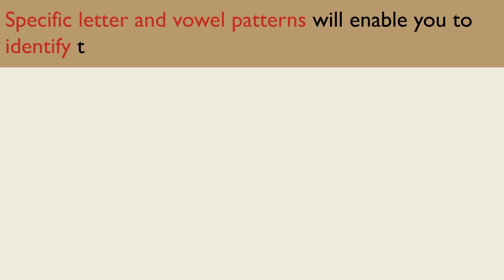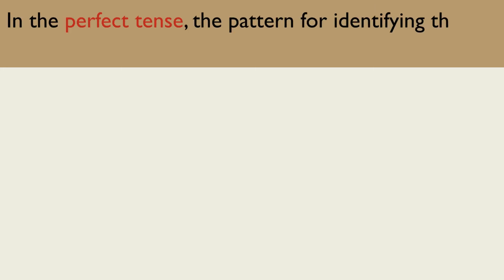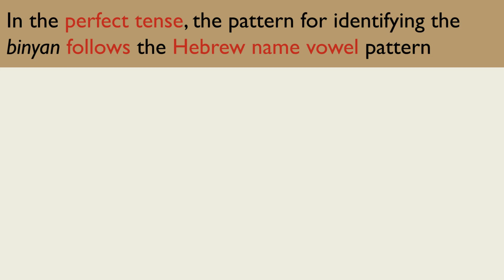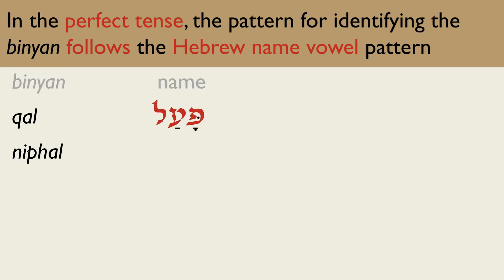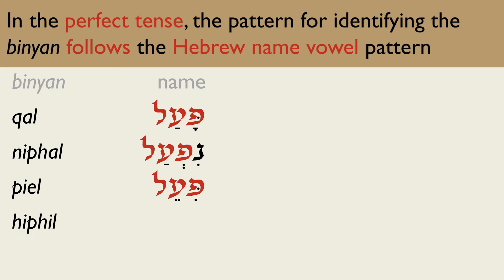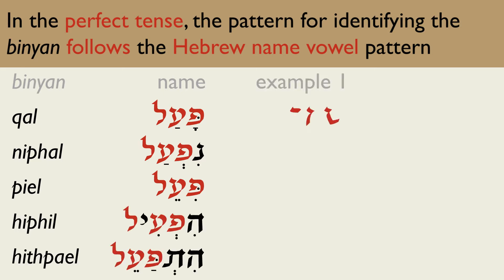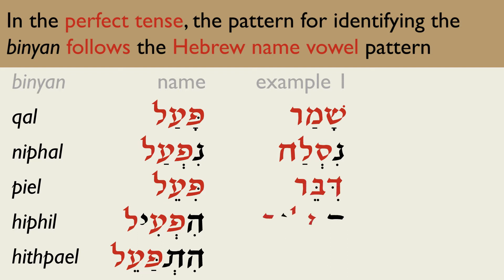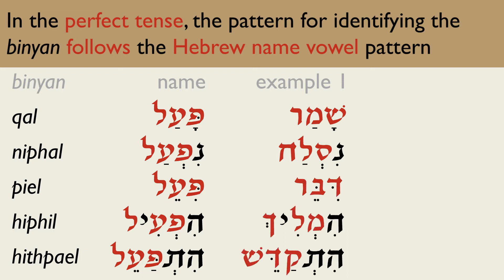Once you have found the root and the tense, it is time to identify the Binyan using specific letter and vowel patterns. These patterns are different for the imperfect and perfect tenses. In the perfect tense, the pattern for identifying the Binyan follows the Hebrew name for the different Binyanim: the Kal pattern is Po'al, the Nifal is Nifal, then Pi'el, Hif'il, and Hispa'el. Notice how the only difference between the name of the Binyan and the example column is that the root letters are different — all other letters and vowels are identical. Nislach and Nifal share the same Nun prefix and the same vowels, just a different root.